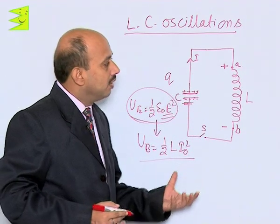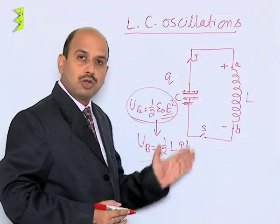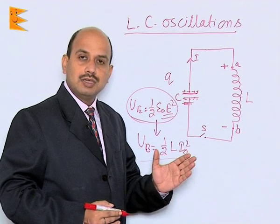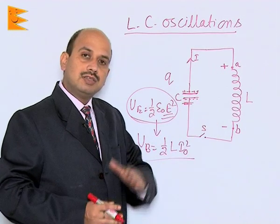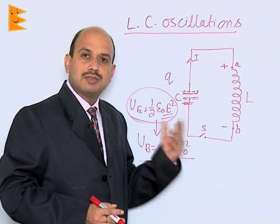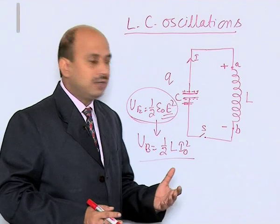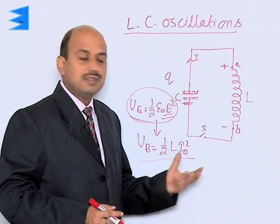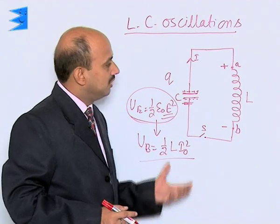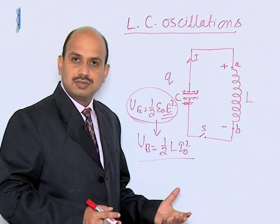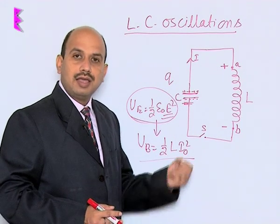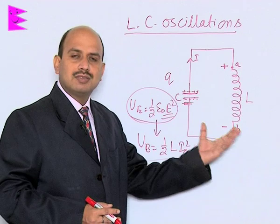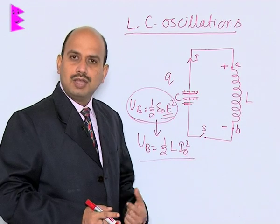By this way, the capacitor keeps discharging while the inductor keeps charging, and when the inductor discharges the capacitor charges — every time the polarity of the capacitor changes. These types of oscillations are known as LC oscillations, and in this process the charge is oscillating, or we can say the current is oscillating.